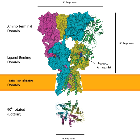AMPA receptor trafficking to the PSD in response to LTP. Once AMPAR receptors are transported to the perisynaptic region through PKA or SAP97 phosphorylation, receptors are then trafficked to the postsynaptic density (PSD). However, this process of trafficking to the PSD still remains controversial. One possibility is that during LTP, there is lateral movement of AMPA receptors from perisynaptic sites directly to the PSD. Another possibility is that exocytosis of intracellular vesicles is responsible for AMPA trafficking to the PSD directly. Recent evidence suggests that both of these processes are happening after an LTP stimulus; however, only the lateral movement of AMPA receptors from the perisynaptic region enhances the number of AMPA receptors at the PSD. The exact mechanism responsible for lateral movement remains to be discovered.